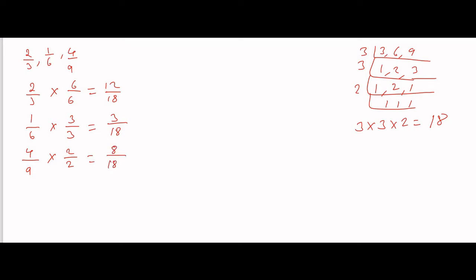Now we arrange these in ascending order, which means small to big. The smallest is 3/18, then 8/18, then 12/18.